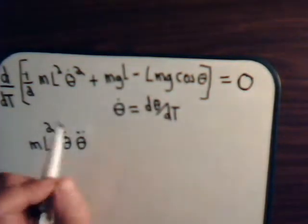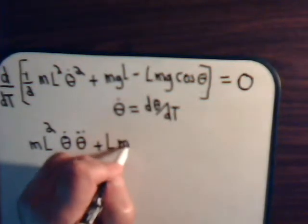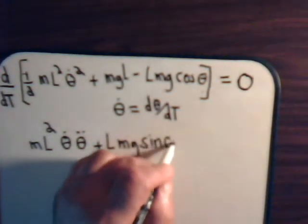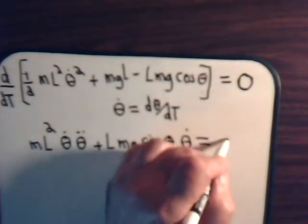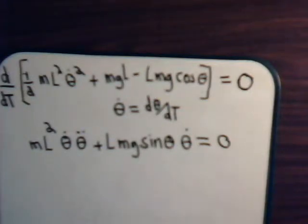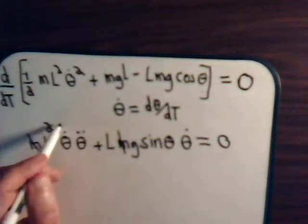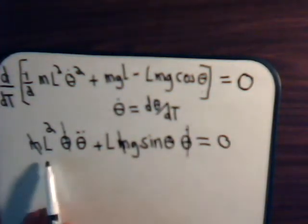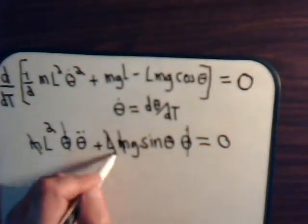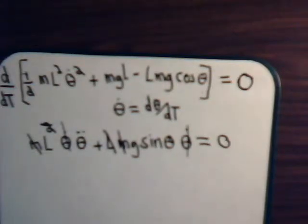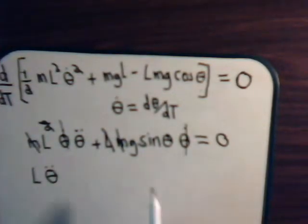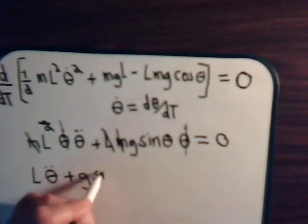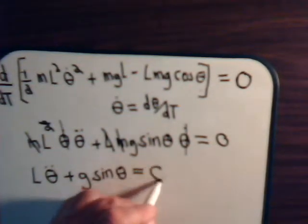After performing cancellations — the M's cancel, one power of L cancels — we arrive at: L theta-dot-dot plus g sine of theta equals zero.